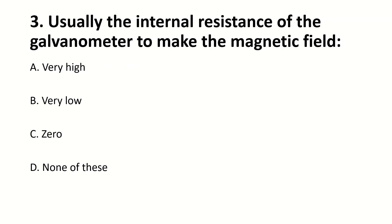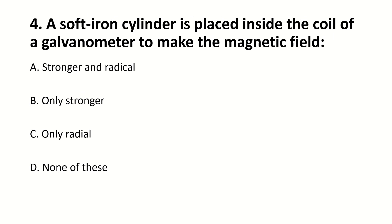The internal resistance of the galvanometer — to make the magnetic field is — blank. Right answer is B: very low. A soft iron cylinder is placed inside the coil of a galvanometer to make the magnetic field. Right answer is A: stronger and radial.